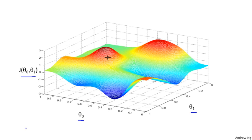In gradient descent, what we're going to do is spin 360 degrees around, look all around us, and ask: if I were to take a little baby step in some direction and I want to go downhill as quickly as possible, what direction do I take that step? It turns out that if you're standing at that point on the hill and you look all around, you find that the best direction to take a little step downhill is roughly that direction. And now you're at this new point on the hill — you again look all around and decide what direction to step to take a little baby step downhill, take another step, and keep going until you converge to a local minimum.